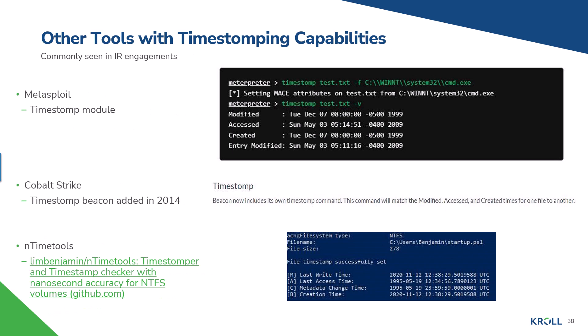Other tools with timestomping capabilities commonly seen in IR engagements: Metasploit has a timestomp module; Cobalt Strike added a timestomp beacon back in 2014 — so that capability has existed for over a decade. There's also NTFSTimestamps — a time stomper and timestamp checker with nanosecond accuracy that I found on GitHub. The best way to learn this is to tinker: timestomp a file yourself, grab the MFT, parse it, and see if you can detect what you did.